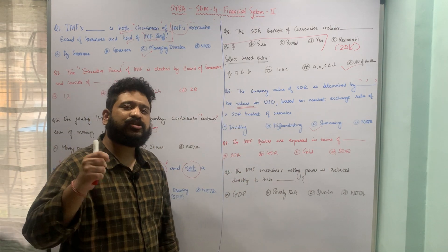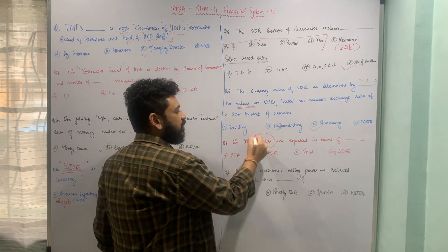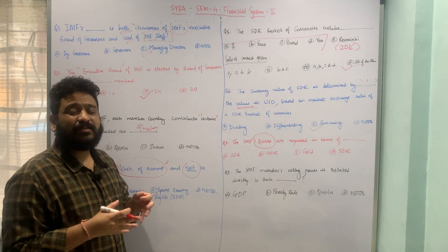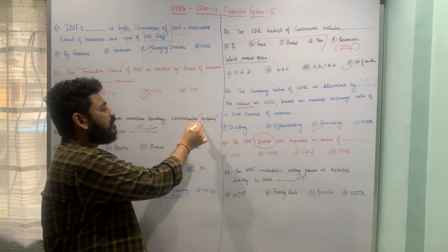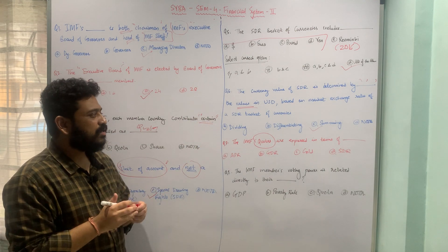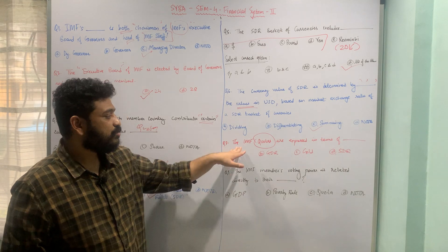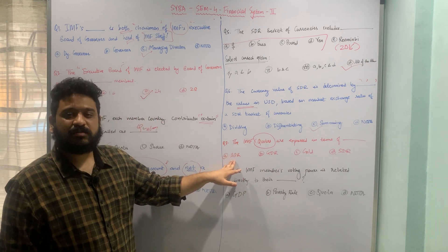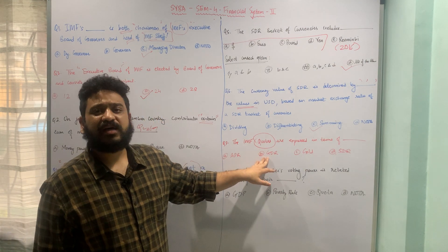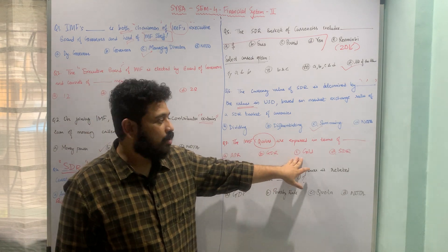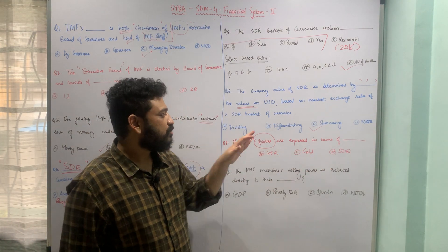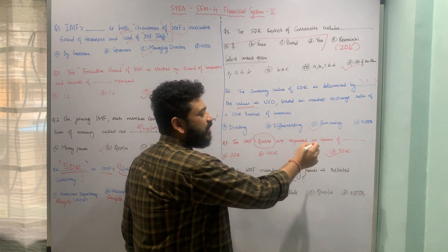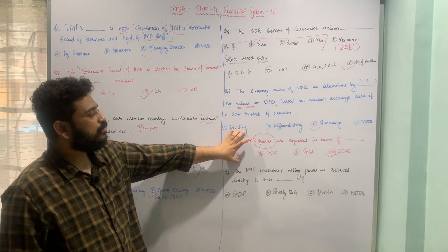Regarding IMF quotas — the contribution each member country makes on joining — what are IMF quotas expressed in terms of? The options are: A) ADR (American Depository Receipts), B) GDR (Global Depository Receipts), C) Gold, or D) Special Drawing Rights (SDRs). IMF quotas are expressed in terms of SDRs, so Option D — SDR — is the correct answer.